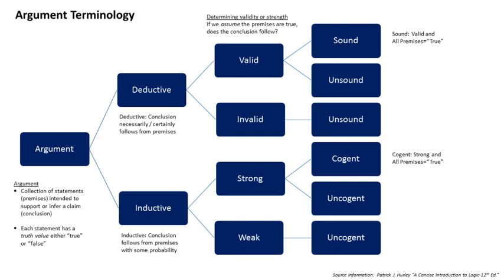In logic and philosophy, an argument is a series of statements in a natural language, called the premises (both spellings are acceptable), intended to determine the degree of truth of another statement, the conclusion. The logical form of an argument in a natural language can be represented in a symbolic formal language, and independently of natural language, formally defined arguments can be made in math and computer science. Logic is the study of the forms of reasoning in arguments and the development of standards and criteria to evaluate arguments.